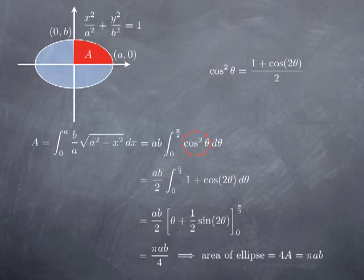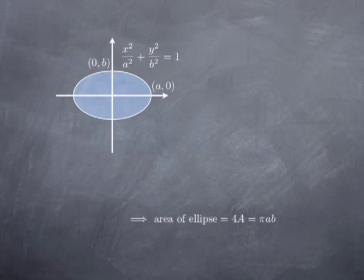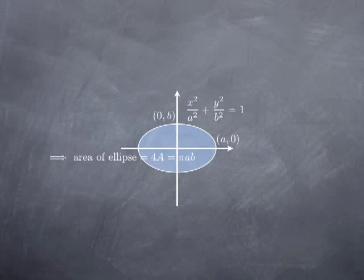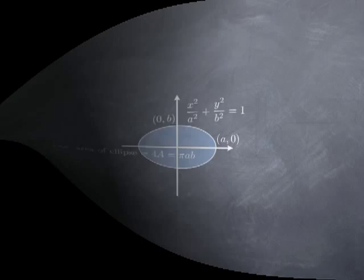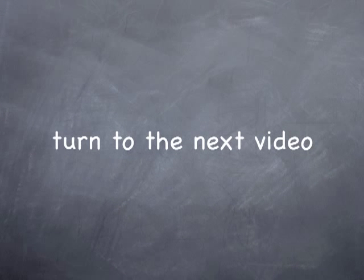This πab/4 is one-fourth of the area of the ellipse, so the total area of the ellipse is πab. When a equals b equals the radius r, we recover πr² for the area of a disk — so this formula also gives us the disk area from first principles. This is the formula for the area of an ellipse. Turn to the next video to see more examples using trig substitution.